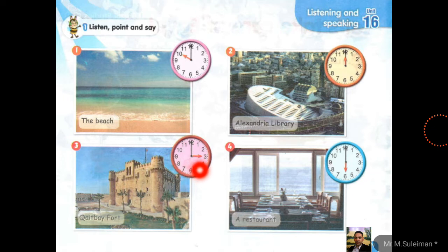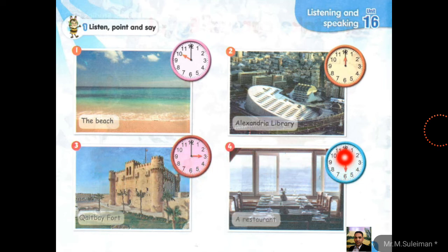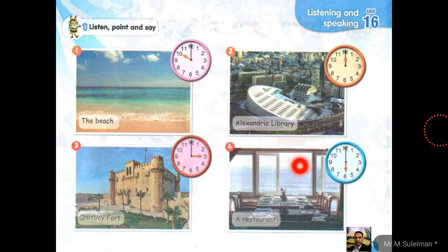Number three: what time is it? Three o'clock. Let's visit Qaitbay Fort. This is Qaitbay Fort. Number four: what time is it? It's six. What is it? It's the restaurant. Let's eat fish at the restaurant. I hope you enjoyed our lesson today. Have a nice time! Good job!